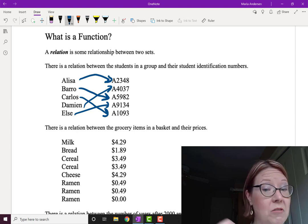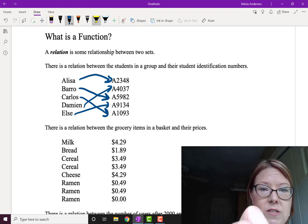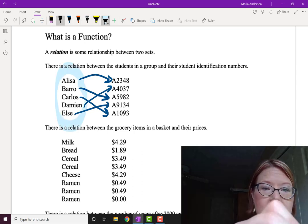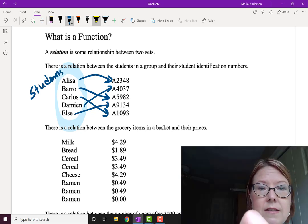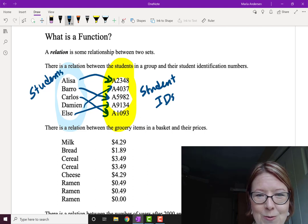They are all unique. Every student has their own ID number, and so we're just forming a relationship between two sets. The first set is the set of students, and the second set is the set of student IDs, and there's a well-defined relationship between those.